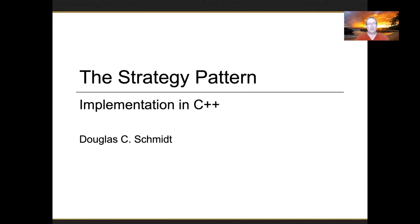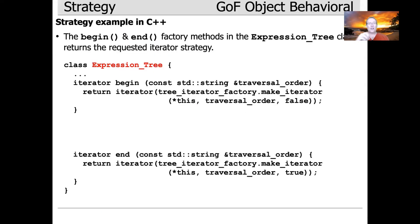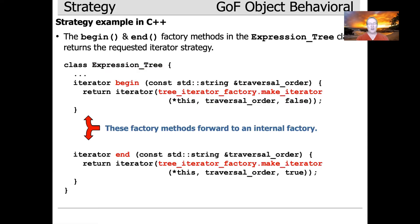I'd like to start talking about the implementation of the strategy pattern in C++, then continue on by looking at more details in the actual code. We're going to focus on the begin and end factory methods provided in the expression tree class, which return the requested iterator strategy. These begin and end factory methods don't do any work themselves, but instead forward to an internal factory that makes the appropriate iterator strategy.